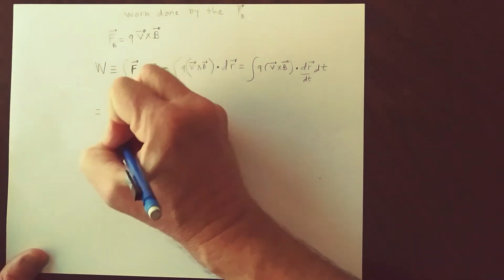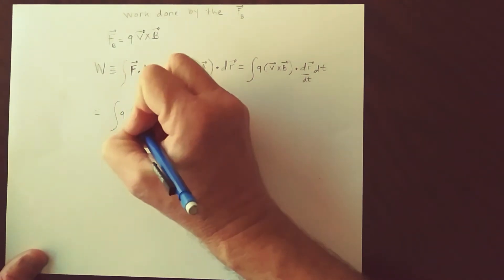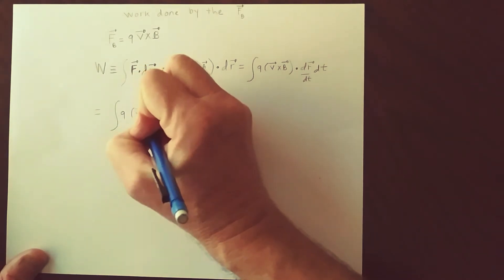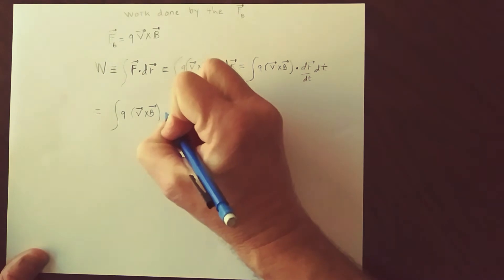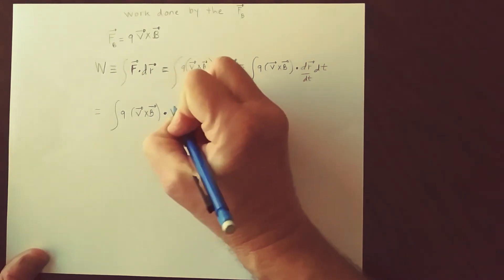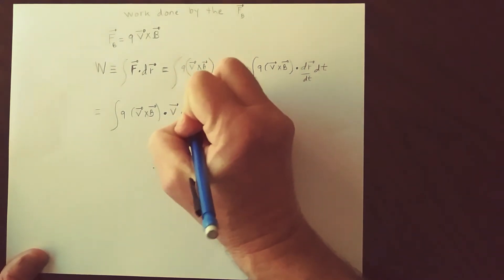So this reduces to the integral of Q times V cross B dot velocity integrated in time.